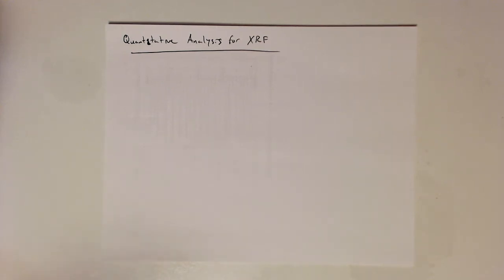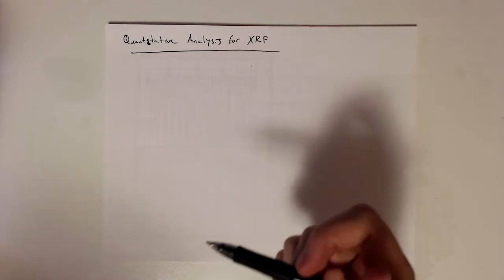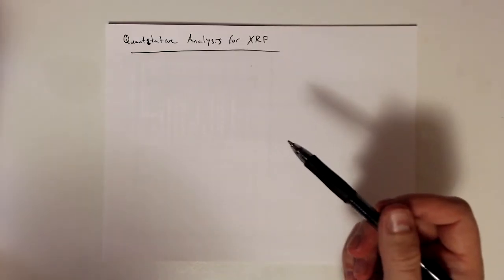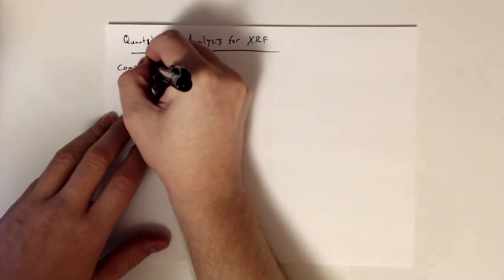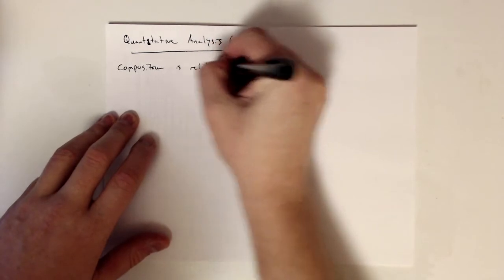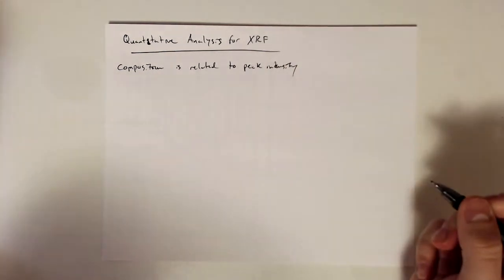With a technique like XRF, we can get the elements and therefore the composition of a specimen, but we generally want to also know amounts — how much. So quantitative analysis, not just qualitative. Just like we did with XRD when we talked about mixtures, the composition in an XRF sample is going to be related to peak intensity, just like it was in XRD.